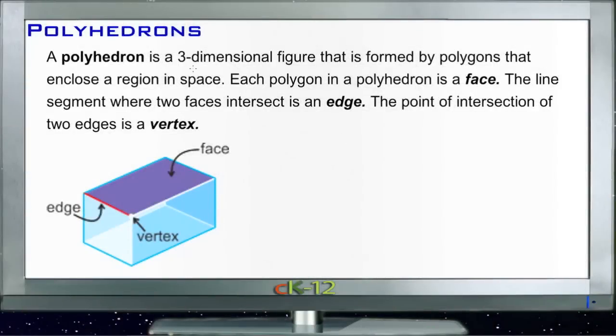All right, let's talk about polyhedrons. A polyhedron is a three-dimensional figure that's formed by polygons that enclose a specific region in space. A polygon is basically a shape that has specific hard sides and more than two of them.